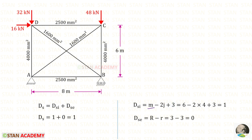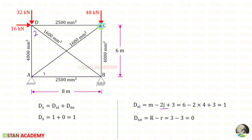M is the number of members. Counting them: 1, 2, 3, 4, 5, 6 — so M is 6. J is the number of joints: 1, 2, 3, 4 — so J is 4. For DSI, we will get 1.